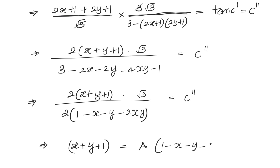So the general solution for the differential equation dy/dx + (y² + y + 1)/(x² + x + 1) = 0 is: x + y + 1 = A(1 − x − y − 2xy).